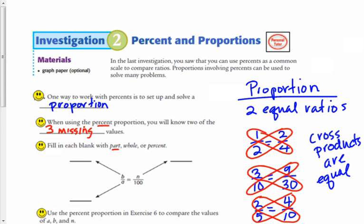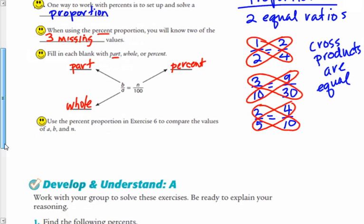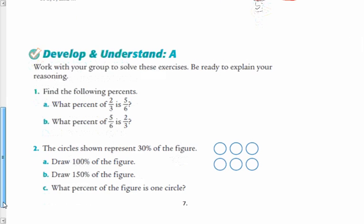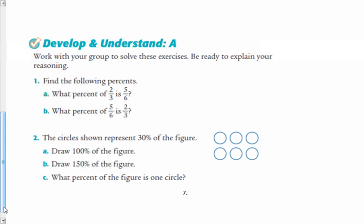The part is B, the whole is A, and the percent is N over 100 always. So whenever we are dealing with a percent, we know that is the number over 100 in a proportion. All right. So let's do a few problems like this and I will show you how we can do that.